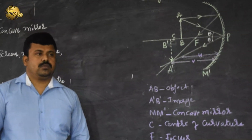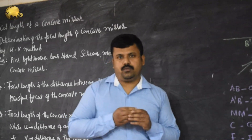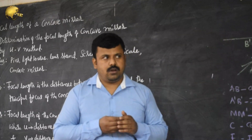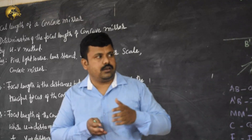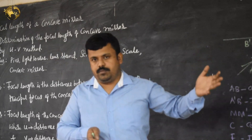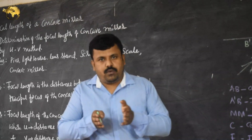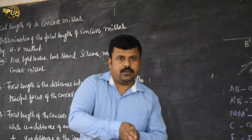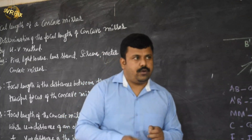Before going to the actual practical, we first need to find out the approximate focal length. To do that, I am using the distant object method. I focus the concave mirror by allowing light from an infinite object to fall on it. Since the light is coming from infinity, all rays are parallel to the principal axis. These all fall on the concave mirror and get reflected back to the focus. So the distance from pole to focus is the focal length.